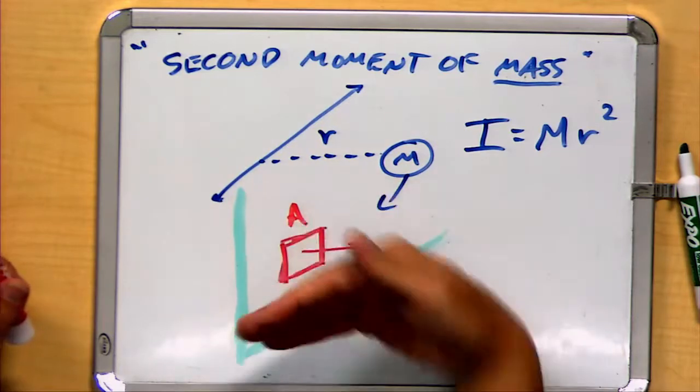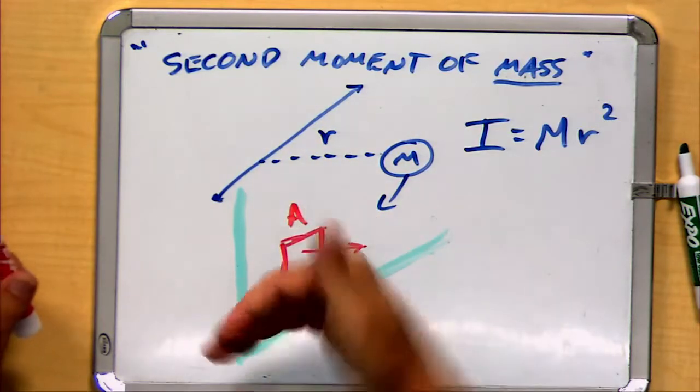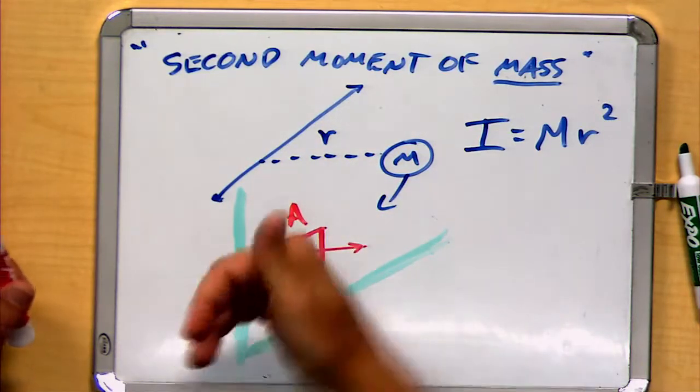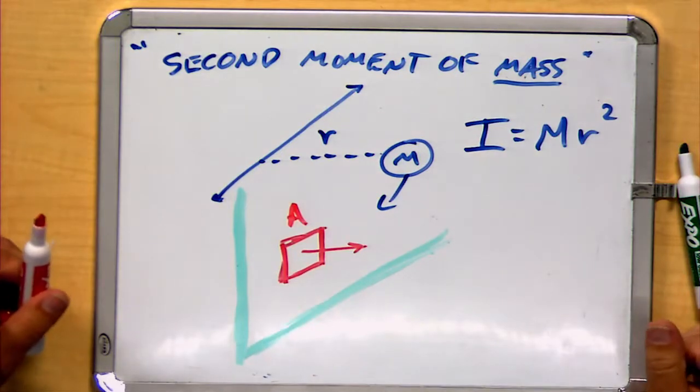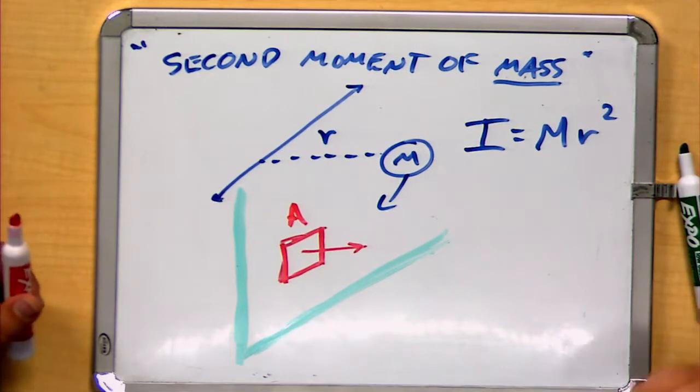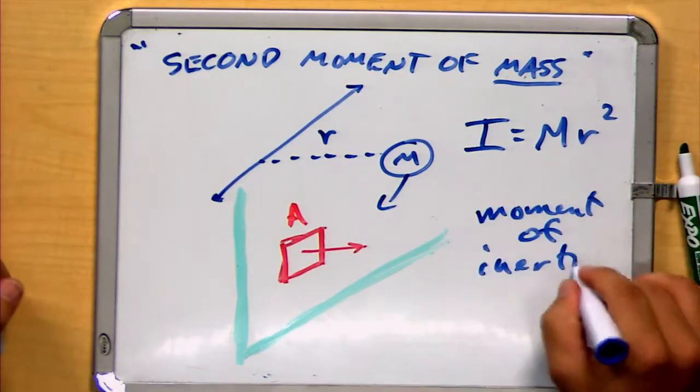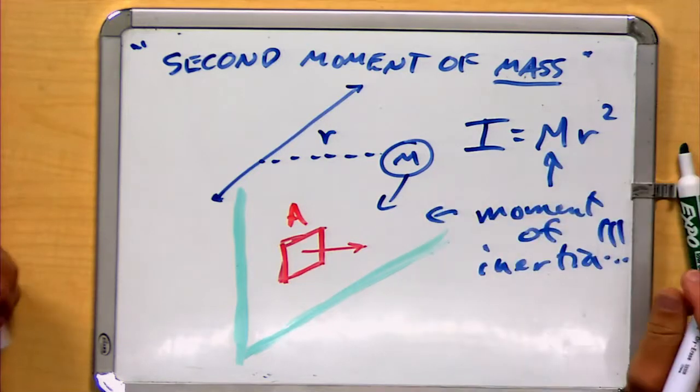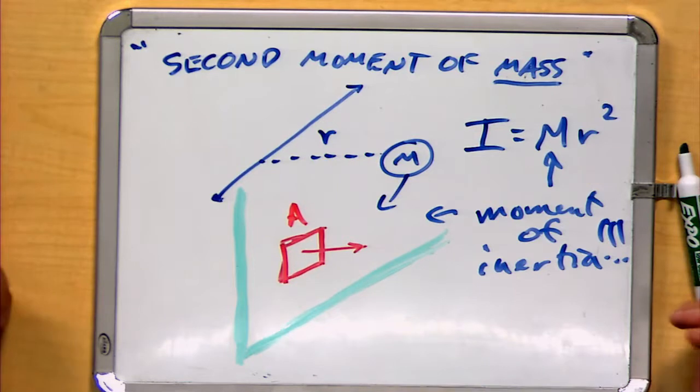Or maybe I take this area and rotate it around a vertical axis. If I try to do either of those, there is a resistance that's associated with that. And this resistance is similarly called the moment of inertia, which can be confusing unless you're paying close attention to your context.